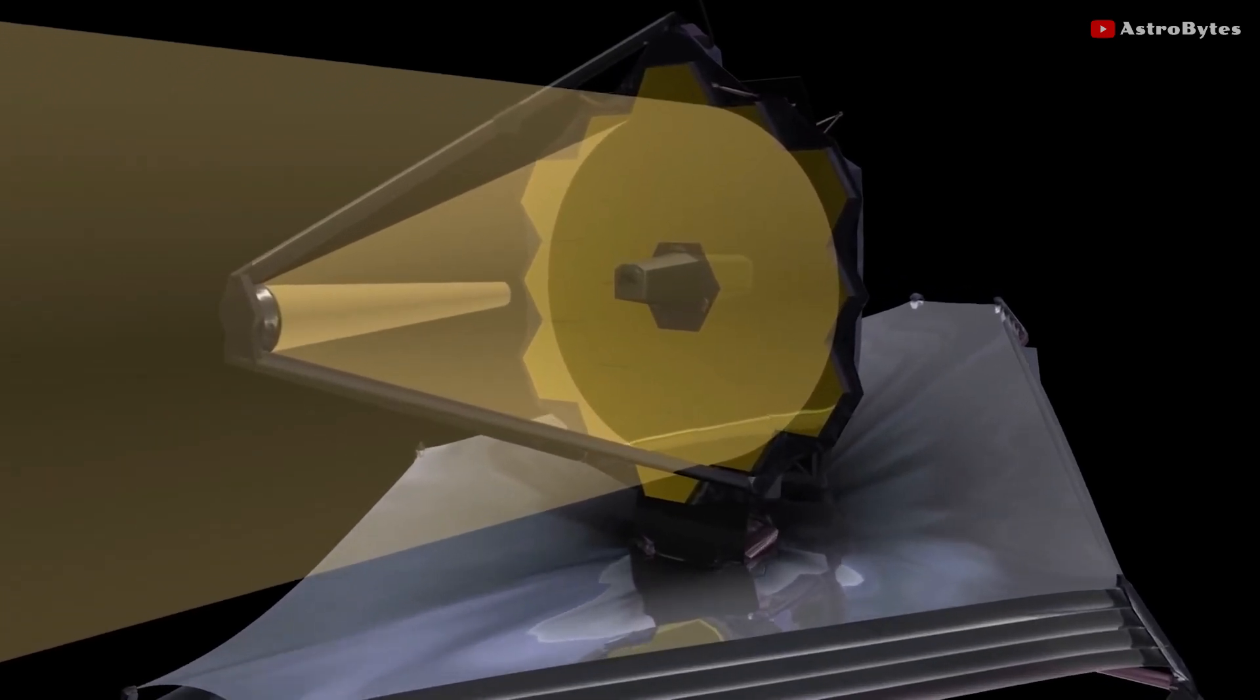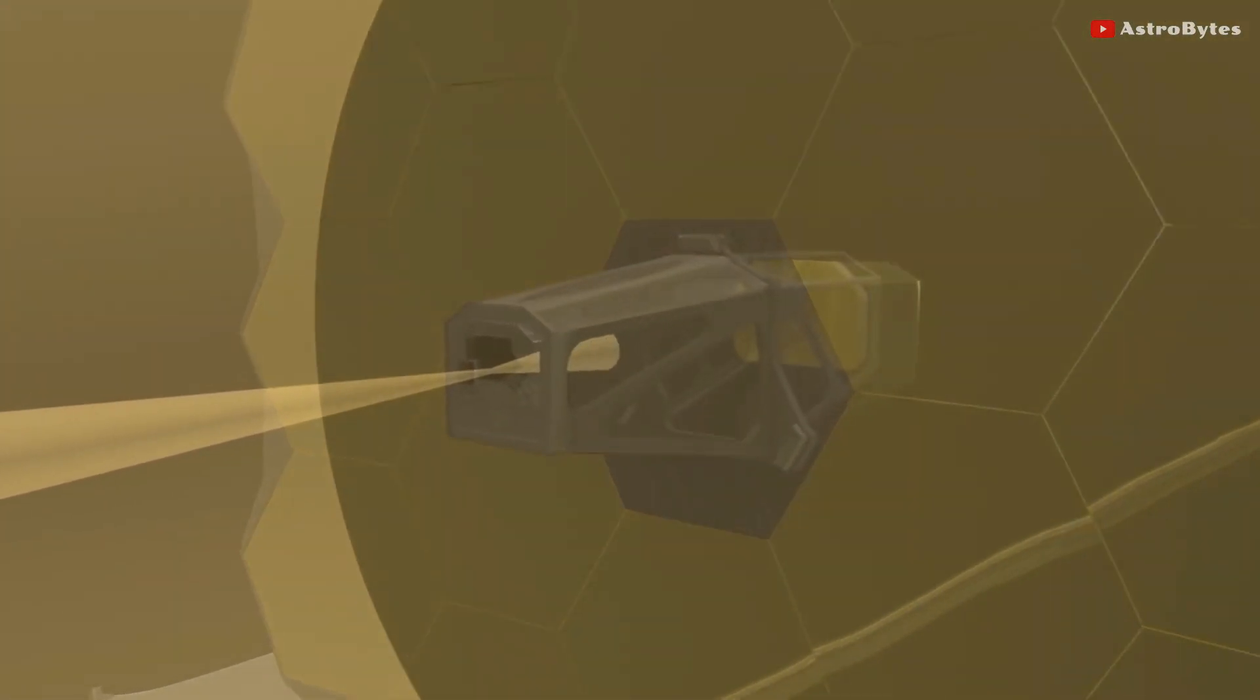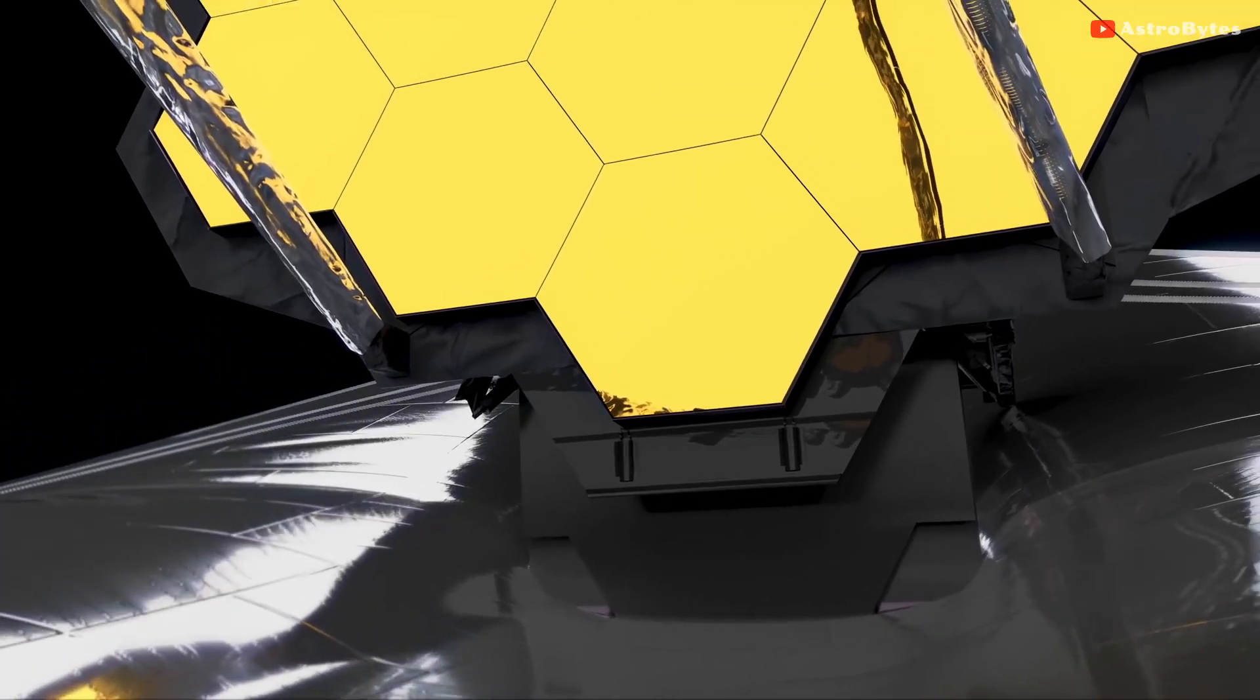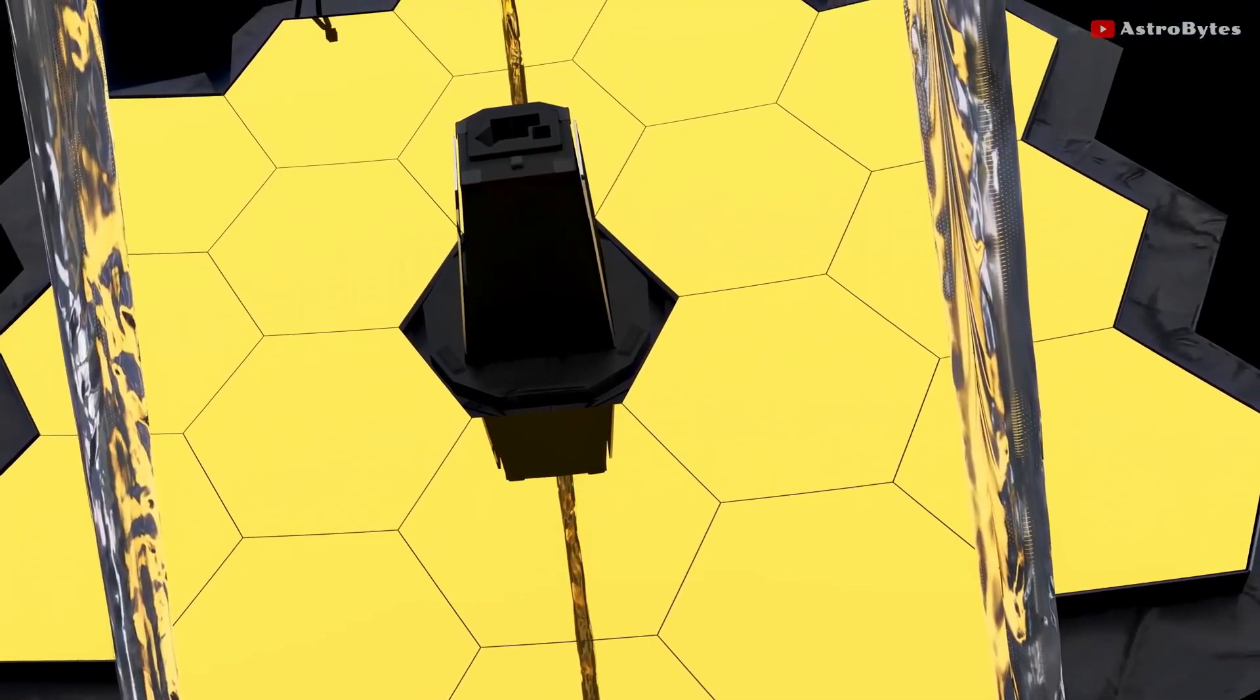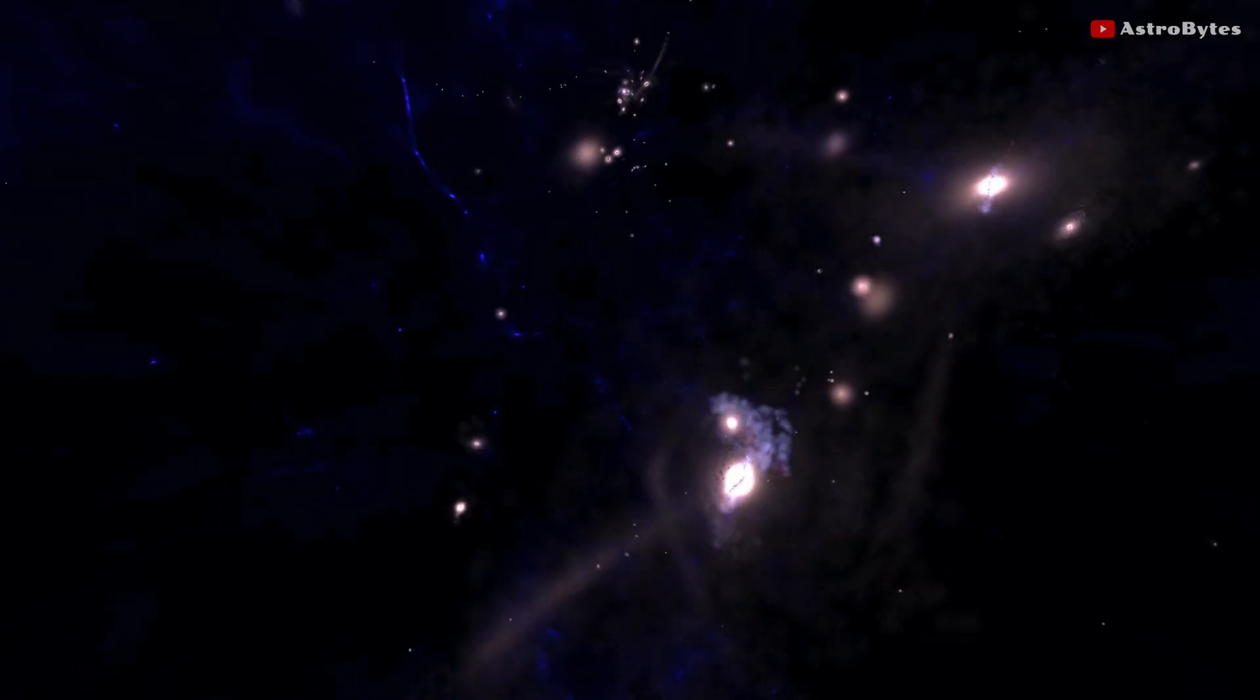This is a great starting point for mirror alignment. The process of alignment is expected to take about three months, after which the telescope will begin taking images of Earth-like planets, stars and distant galaxies.